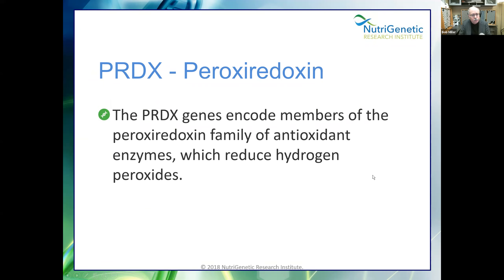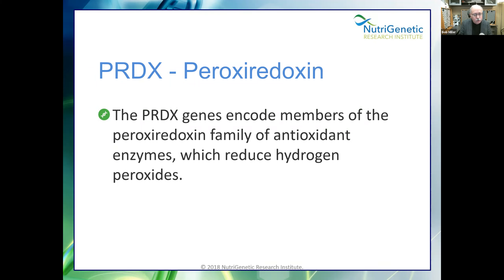Peroxiredoxins are members of the peroxiredoxin family of antioxidant enzymes that reduce hydrogen peroxides. Regarding hydrogen peroxide: there was a book, 'The One Minute Miracle Cure,' about taking hydrogen peroxide — the theory being that it kills pathogens. Hydrogen peroxide is not inherently bad, but when it's excess or not cleared and combines with iron, we can create a problem. How many people started taking food-grade hydrogen peroxide and got worse? Some people use hydrogen peroxide treatment because it kills pathogens — that's a valid therapy, unless you've got iron turning it into free radicals.